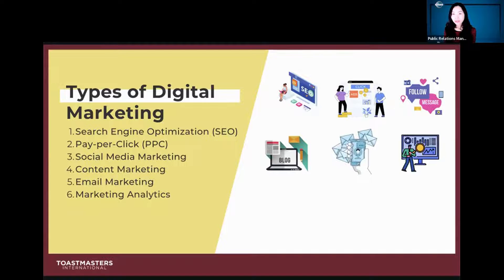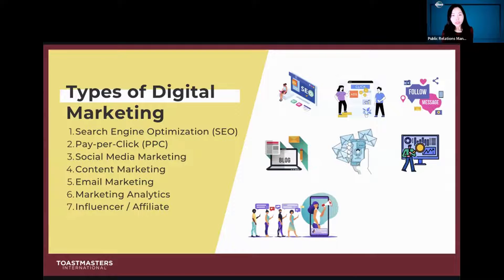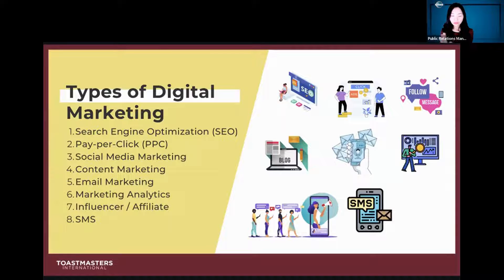Marketing analytics uses numbers and research to get people's attention and show expertise. Then there's influencer and affiliate marketing — if you have 100,000 followers, you can become an influencer and companies will hire you to talk about their products. SMS marketing is short message-based strategized marketing — basically text messages. Nowadays you probably receive a lot of them. It can be annoying, but it gets the job done and some brands use it effectively.